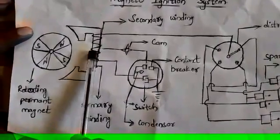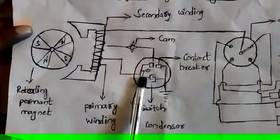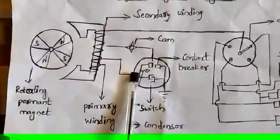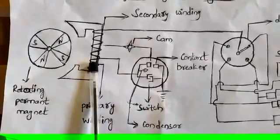When the primary winding current passes through the contact breaker and condenser, there will be an increase of voltage in the condenser, which is higher than the voltage in the primary winding.